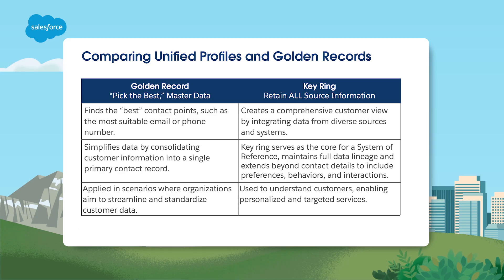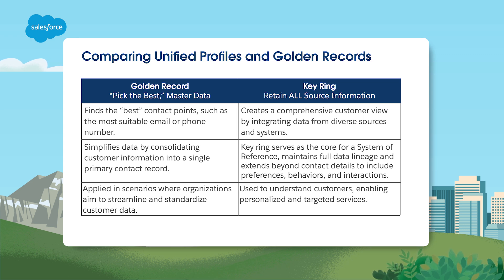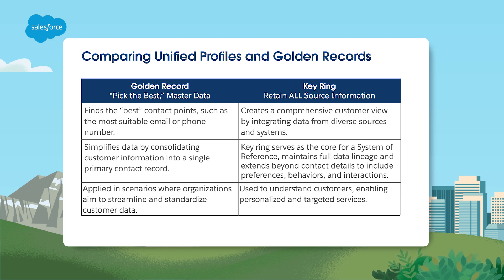It's very important to understand that a unified profile from Data Cloud is not the same as what's often referred to as a golden record. A golden record merges the best data into a single view of a customer. A Data Cloud unified profile, on the other hand, creates a much more complex and comprehensive customer view, integrating data from diverse sources and systems and maintaining a complete data lineage that extends beyond the contact details to include preferences, behaviors, and interactions.